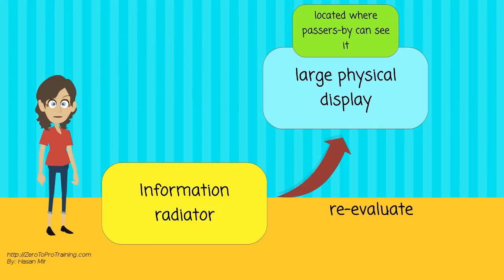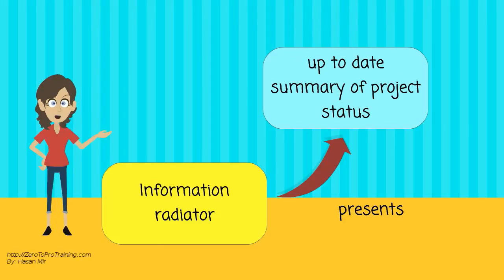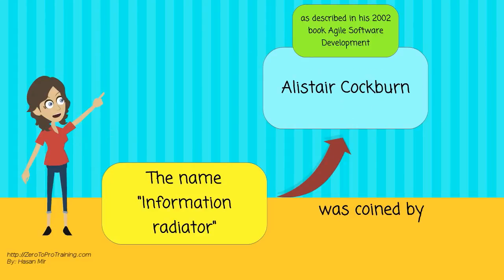In Agile software development, an information radiator is normally a dashboard-like, large physical display located prominently in an office where passers-by can see it. It presents an up-to-date summary of the status of a software project or other product. The name was coined by Alastair Cockburn and described in his 2002 book Agile Software Development.